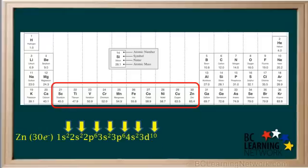You can always check a configuration by adding up all the superscripts. Add all these up, and you can see that adding them all gives you a total of 30, which is the number of electrons in a neutral zinc atom, or the atomic number of zinc, which is 30.